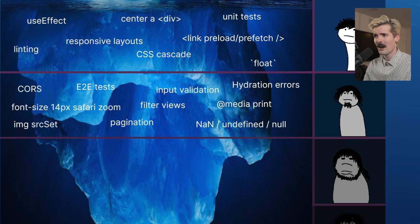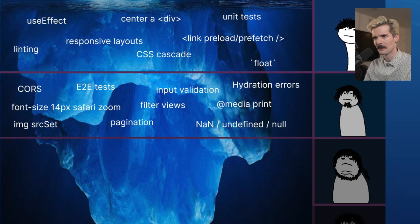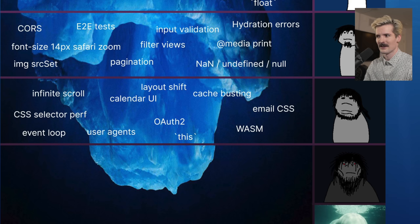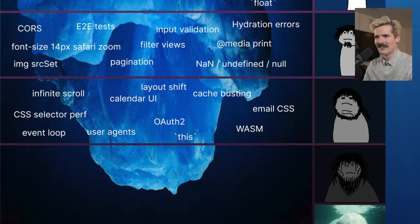NaN, undefined, null — NaN is for things that aren't numbers, undefined is for things that don't exist, and null is for things that don't... never mind, we'll continue. Layout shift — this is what happens when things like fonts load in or a picture tag appears that wasn't there before, causing other elements to change position. Maybe the default font is slightly different sizing than the font you actually load in. Next has helped with this a lot, but it's not fun.